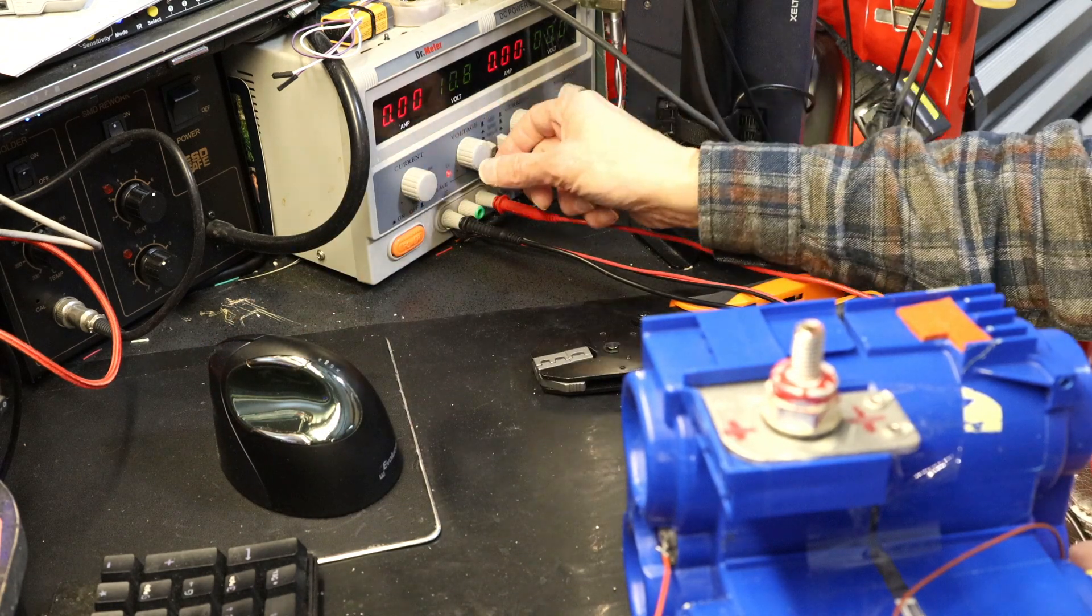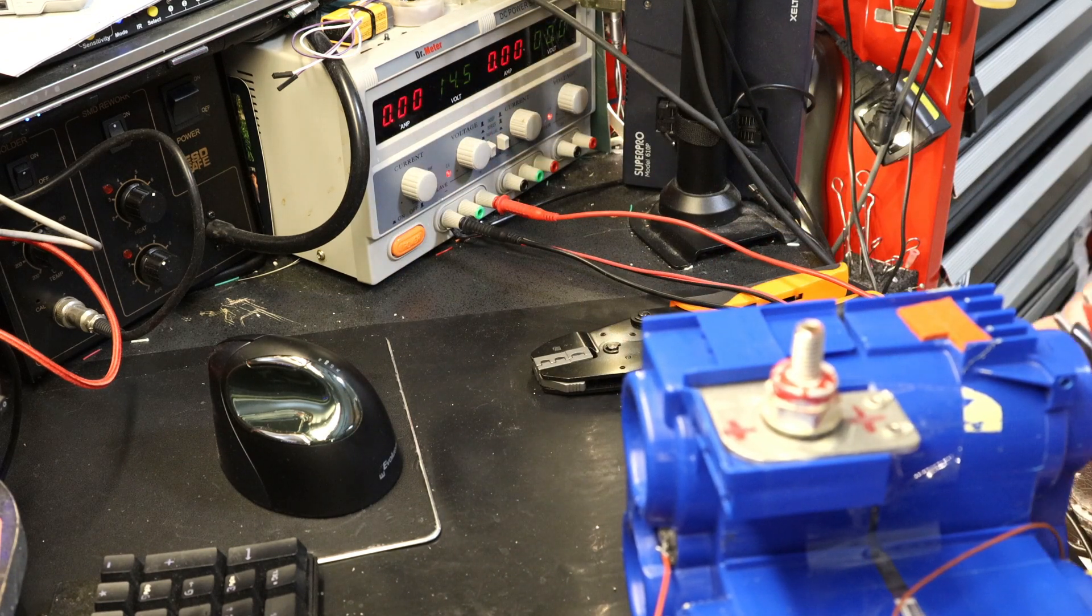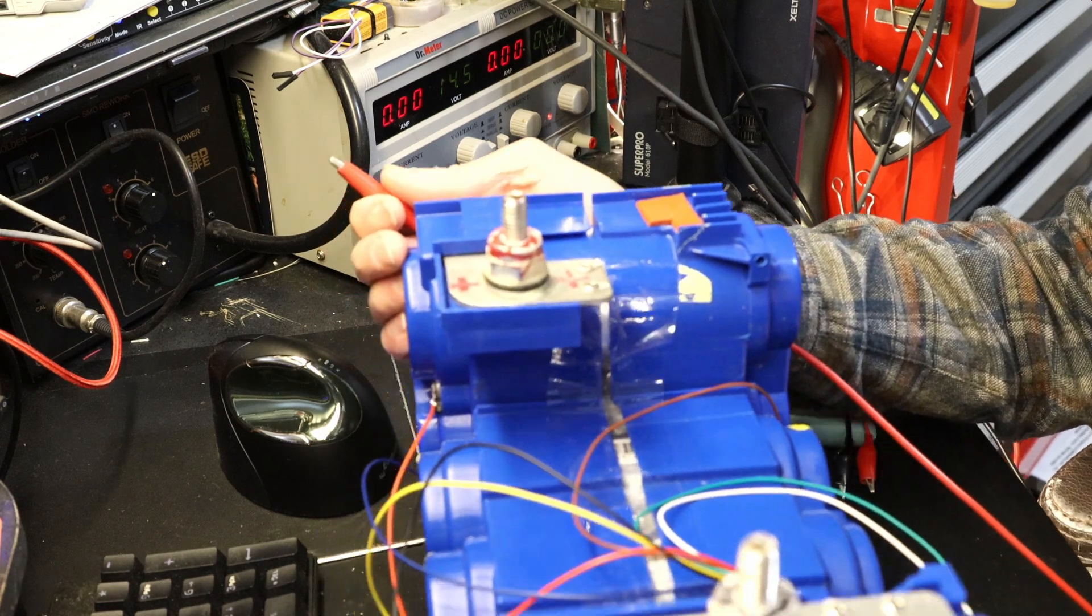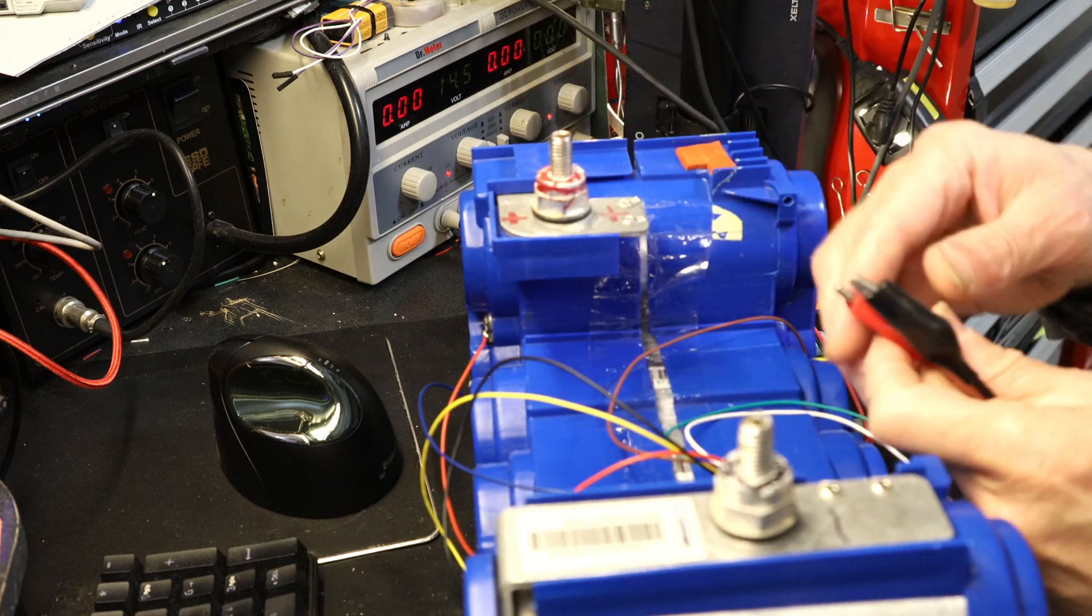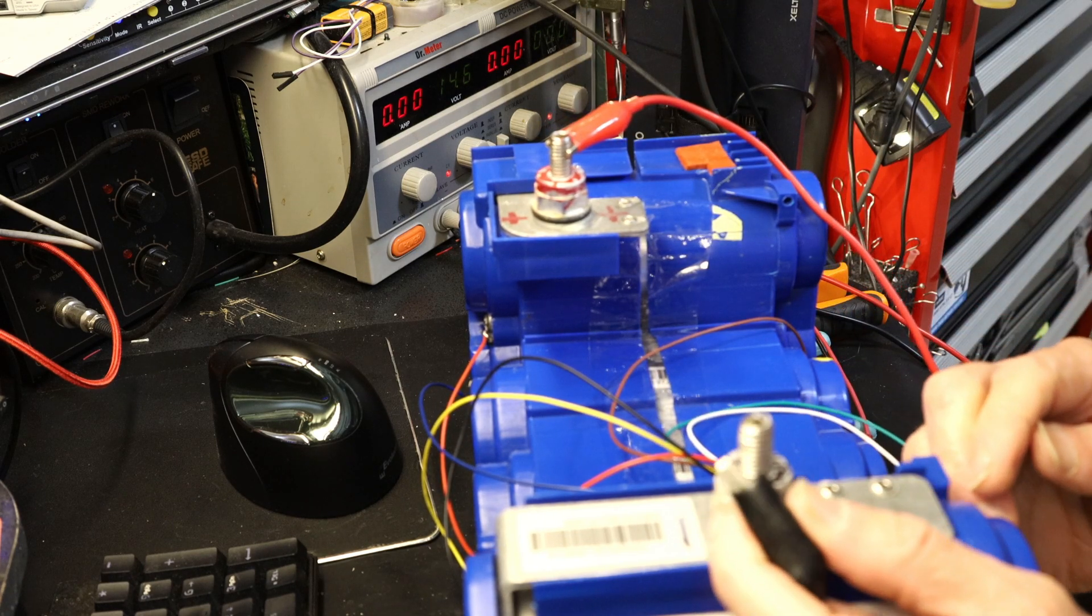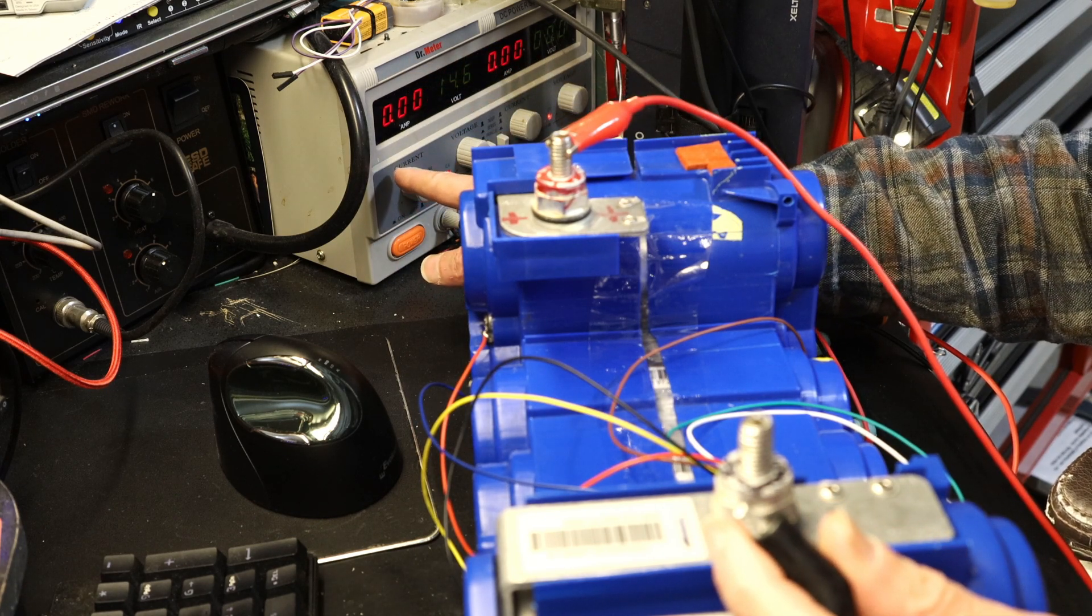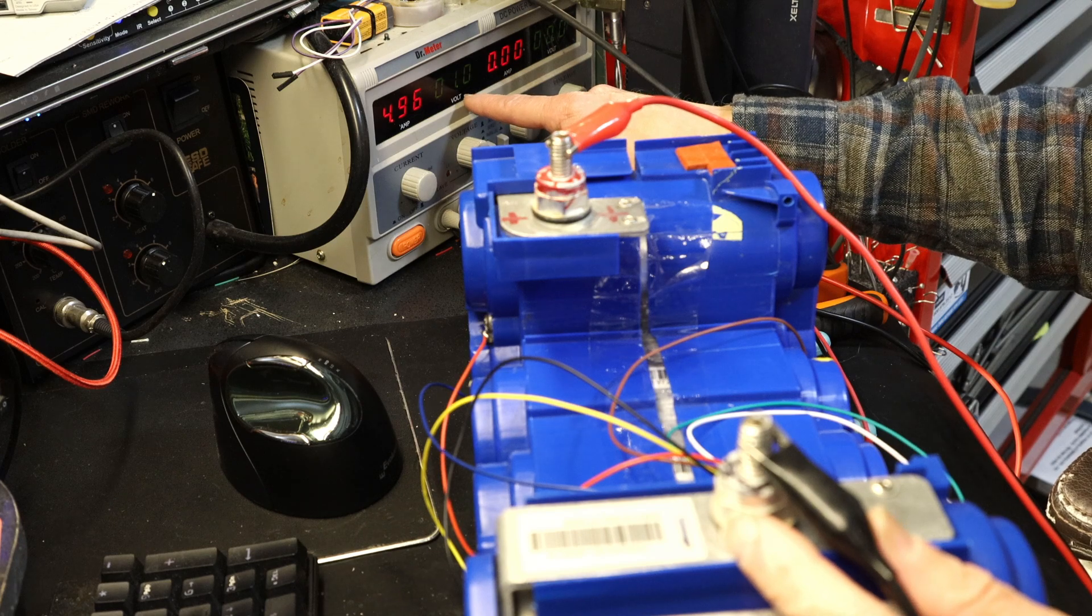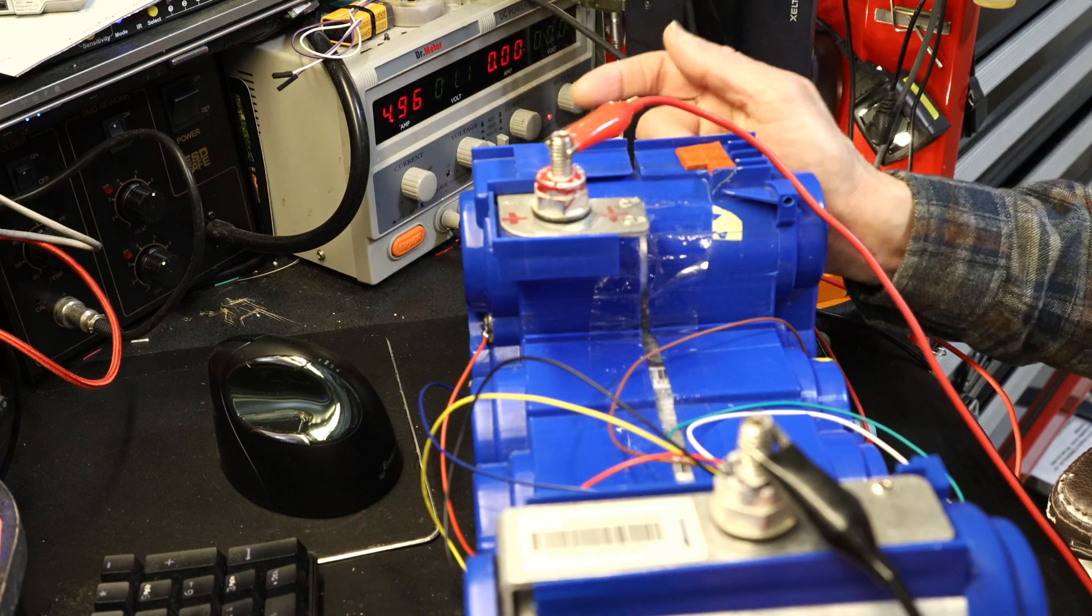So now I have here 14 volts. The capacitor can take up to 16 so 14 is safe. Now if I were to put the plus and as soon as I put the minus, this goes to max. Even though this has current limitation, the current limitation is five amps - it goes to 4.9 and the voltage drops to one volt because basically I shorted the power supply. Literally shorted the power supply. That's why this is not safe.